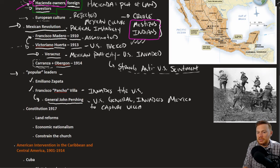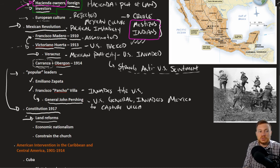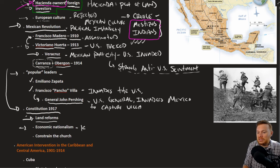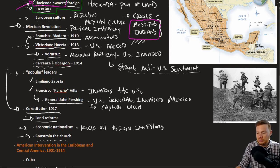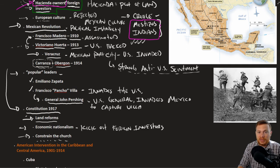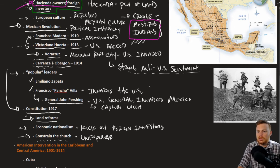Eventually, Carranza took control of the Mexican government. In 1917, a new constitution was drafted to address the problems of land reform — making land ownership available beyond just the Creole class — economic nationalism, which meant essentially removing foreign investors, and putting certain constraints on the Catholic Church's power, such as restrictions on land ownership.